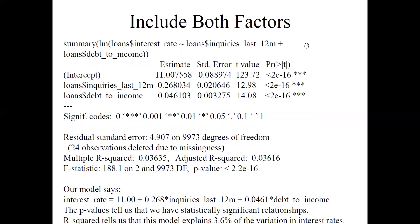So notice that our model has an intercept of 11.0, the slope on inquiries_last_12m is 0.26, and the slope on debt_to_income is 0.046. Both slopes and the intercept are all statistically significant. This is a little better. Our R-squared value is now 0.036—3.6% of the variation in interest rate is explained by doing a multiple linear regression by including more than one factor at the same time.